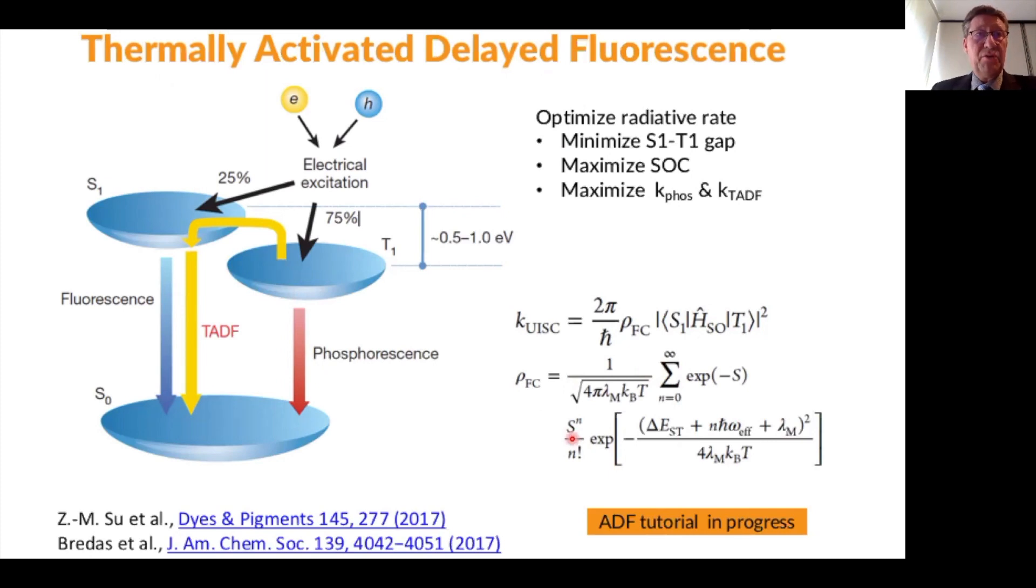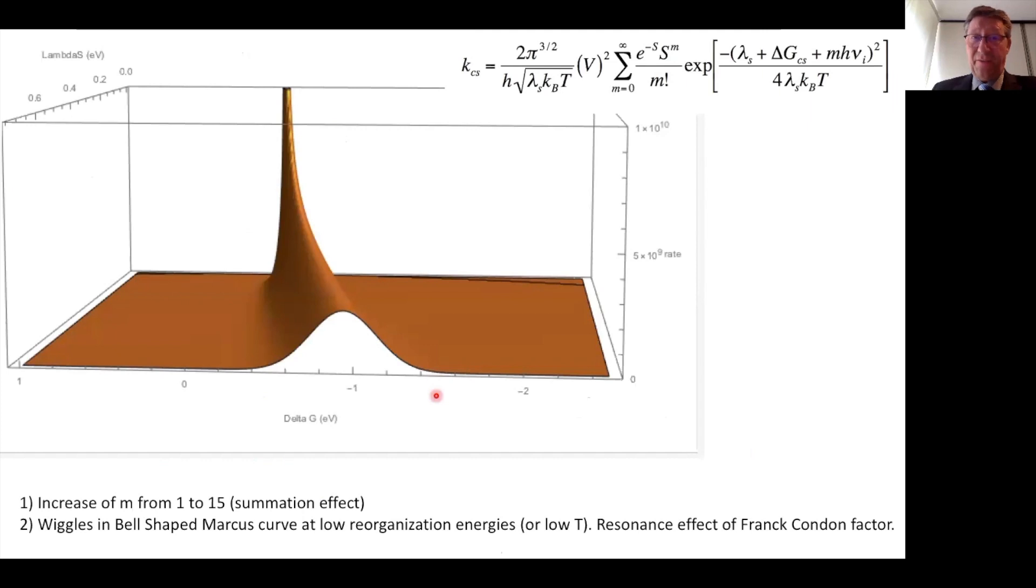Here we see a three-dimensional representation of the classical Marcus expression. This here at the z-axis is the rate. The rate as a function of the driving force, the delta G, at the x-axis. On the y-axis, we have the solvent reorganization energy. So that is the x, the y, and the z.